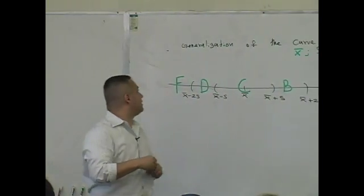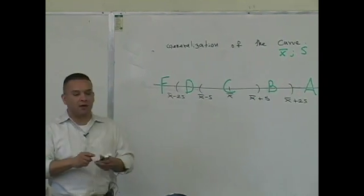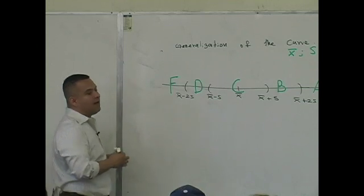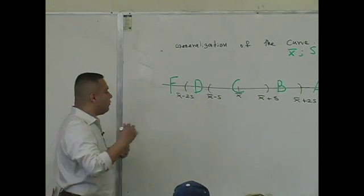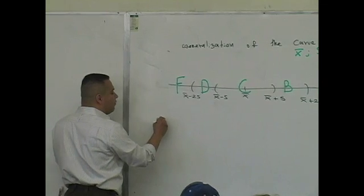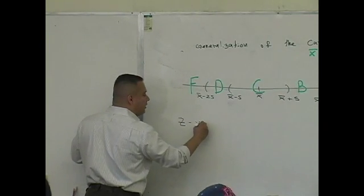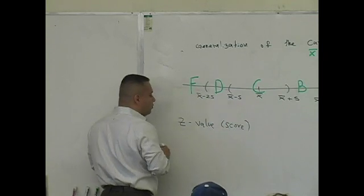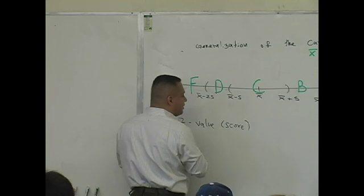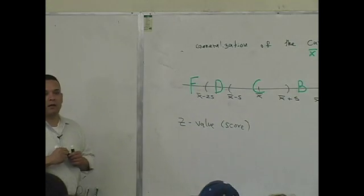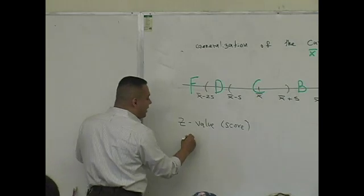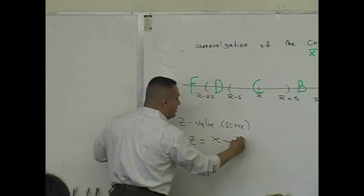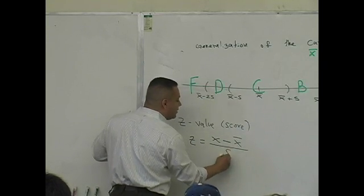Now I'm going to call this next process the generalization of the curve, because that's sort of what it is. To generalize it, I'm going to change some notation. I'll give you what's known as the Z value, or Z score — also known as the standard score or standard value. The Z value is found by taking a data value, subtracting the mean, and dividing by the standard deviation.